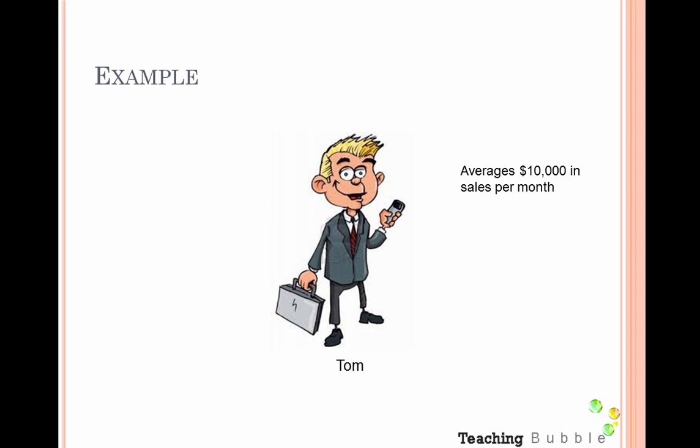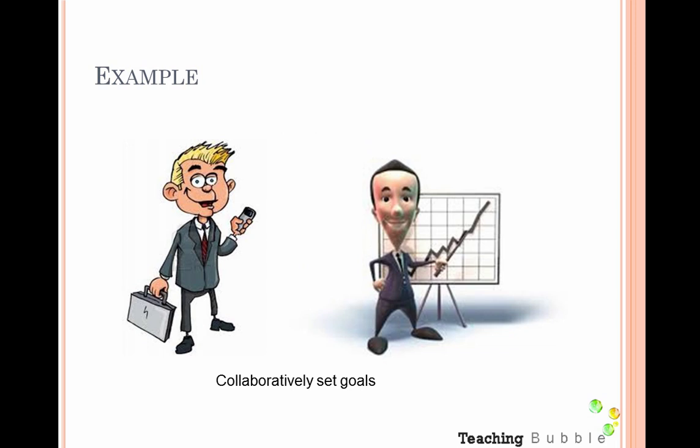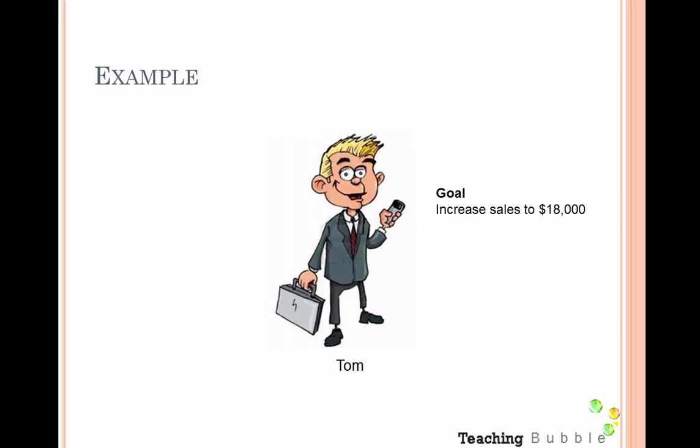Here's an example. Tom is a salesperson who averages $10,000 in sales per month. If he meets with his sales manager, they collaboratively set goals — the manager wants to increase sales, and Tom is also keen to set new benchmarks and improve. Together they come up with a goal to increase sales to $18,000. To be even more specific, you could add a timeframe, such as hitting that target within the next six months.